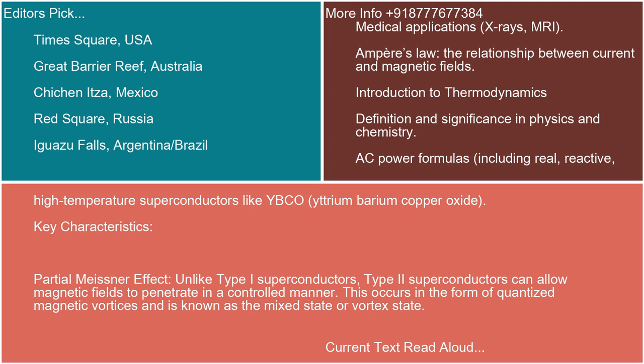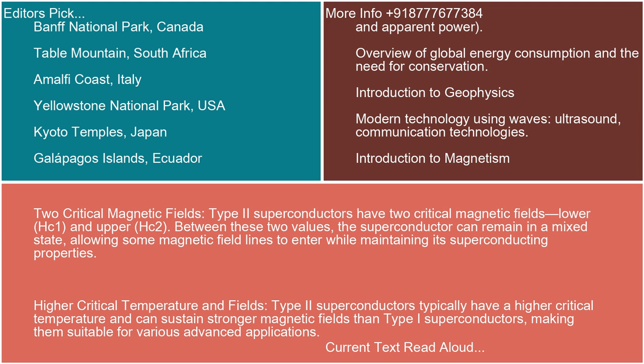Key characteristics. Partial Meissner effect: unlike Type I superconductors, Type II superconductors can allow magnetic fields to penetrate in a controlled manner. This occurs in the form of quantized magnetic vortices and is known as the mixed state or vortex state. Two critical magnetic fields: Type II superconductors have two critical magnetic fields, lower HC1 and upper HC2. Between these two values, the superconductor can remain in a mixed state, allowing some magnetic field lines to enter while maintaining its superconducting properties.